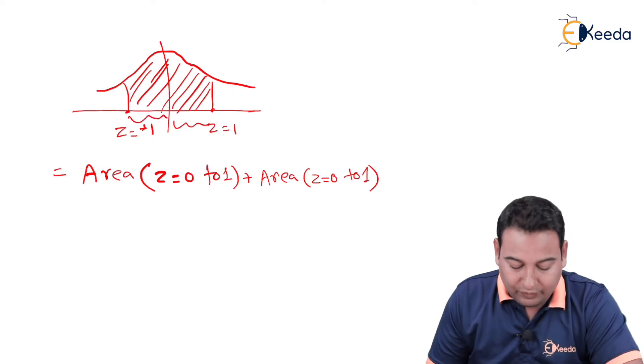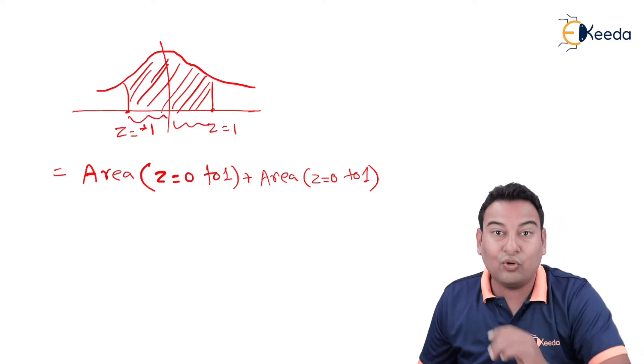This is 0 to 1, again this side also 0 to 1. So you can multiply by 2.